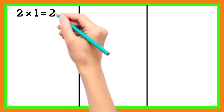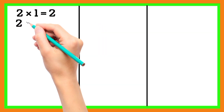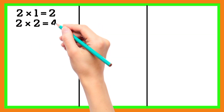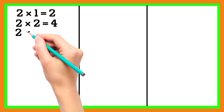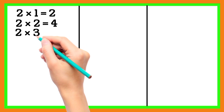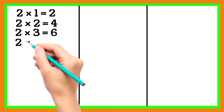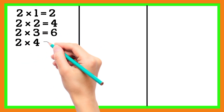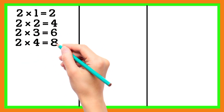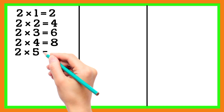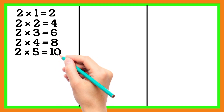2 1 is 2, 2 2 is 4, 2 3 is 6, 2 4 is 8, 2 5 is 10.